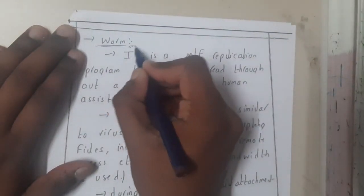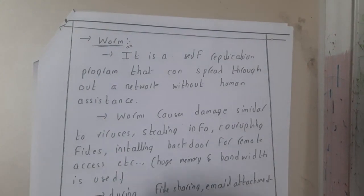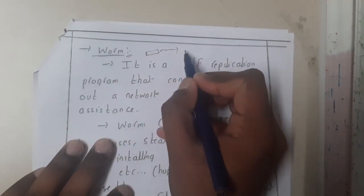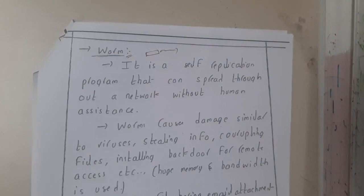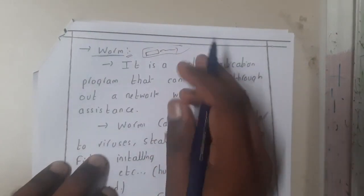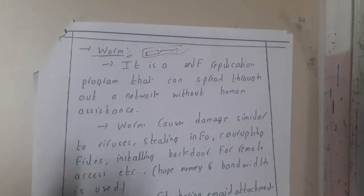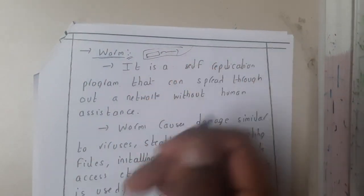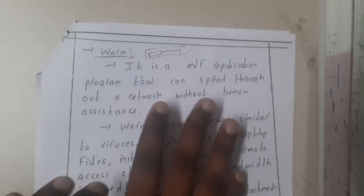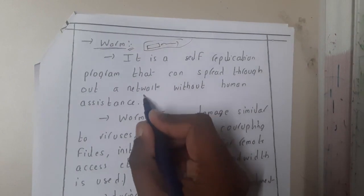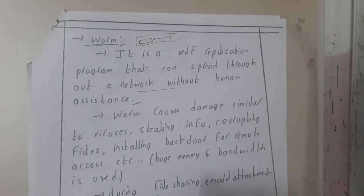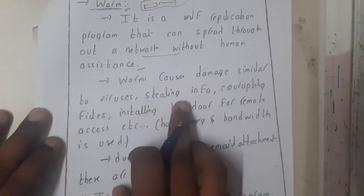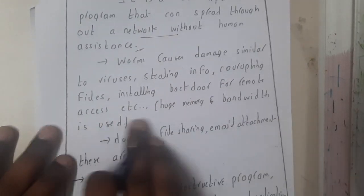A worm moves from one place to another — traveling through the network. If your system gets a worm and there are many systems in your network, all those systems could be affected. It is a self-replication program that can spread throughout the network without human assistance — it slowly spreads everywhere on its own. Worms cause damage similar to viruses: stealing information, corrupting files, installing backdoors for remote access.